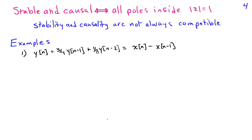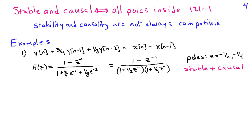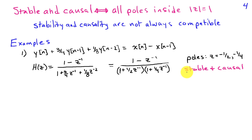Let's look at a couple more examples. In this one, we have the difference equation Y of n plus three-fourths Y of n minus 1 plus one-eighth Y of n minus 2 equals X of n minus X of n minus 1. Writing the system function H of Z and factoring the denominator gives 1 minus one-half Z inverse times 1 plus one-fourth Z inverse. So we have poles at Z equals minus one-half and Z equals minus one-fourth. Both poles have magnitude less than 1, so they lie inside the unit circle, and we can find a stable and causal impulse response H of n.